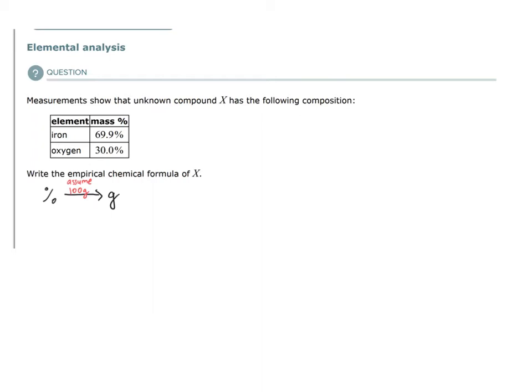By assuming 100 grams, this becomes 69.9 grams for iron. We start with 30.0% for oxygen. By assuming 100 grams, that translates to 30 grams.